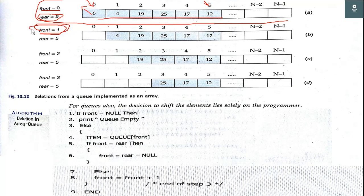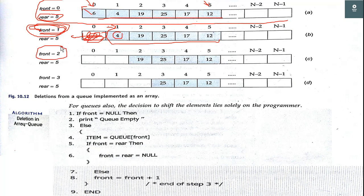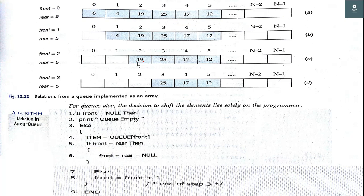If front equals 1, it means the first element of the queue is at index 1 and there is no element before it. In reality we cannot delete an element from static memory allocation — in dynamic memory allocation we can use the delete keyword, but in static memory allocation we cannot delete using any operator. So we just increment the front and indirectly say the element is deleted. To delete the next element (4), we increment front from 1 to 2. To delete 19, we increment front to 3. In this way we can delete elements from a non-empty queue.